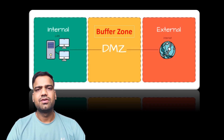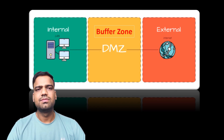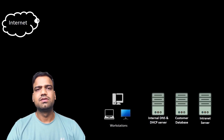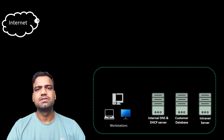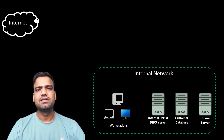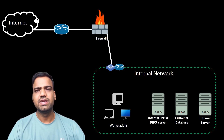Similarly, in network security, a Demilitarized Zone acts as a buffer zone between the internal trusted network and the external unsecure network, typically the internet. Network borders are used to protect insiders from outsiders directly accessing systems within the local network, and this is done by using firewalls and other security devices to filter traffic and only allow authorized traffic to pass through.